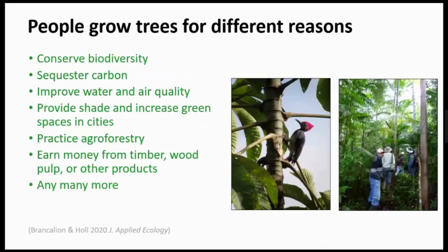Why do people grow trees? People grow trees for a broad range of reasons, which are often not well specified. In many cases, focus is on conserving carbon and biodiversity — much of the talk these days is about sequestering carbon. There's also interest in improving water and air quality in urban areas, providing shade and green space in cities. Oftentimes there's a critical focus on providing income to people on the land, thinking about agroforestry or other products. These reasons and many more are discussed in Pedro's and my recent Journal of Applied Ecology paper.